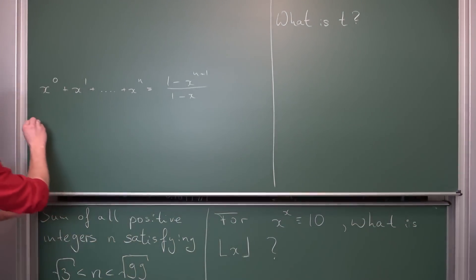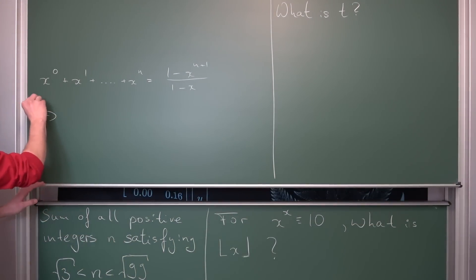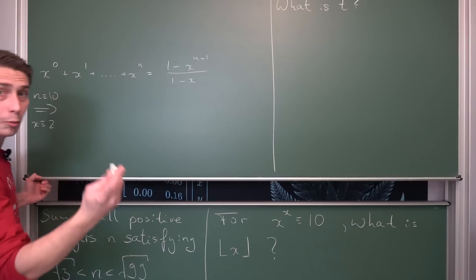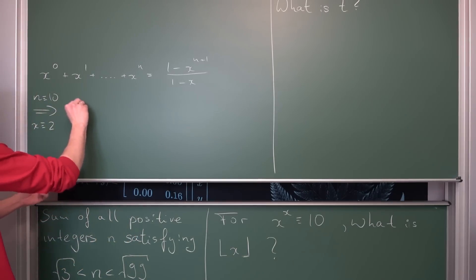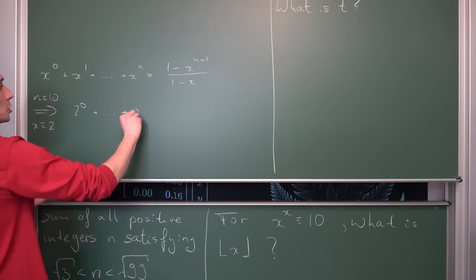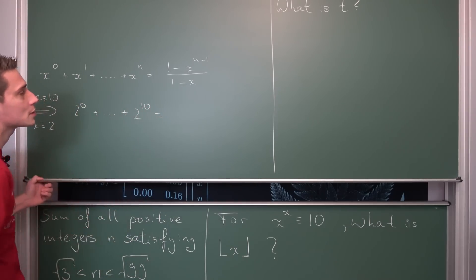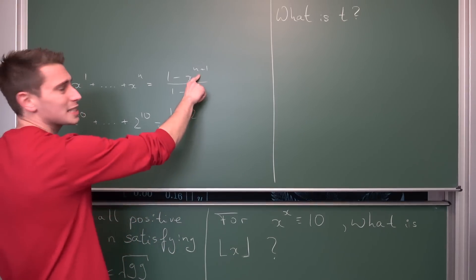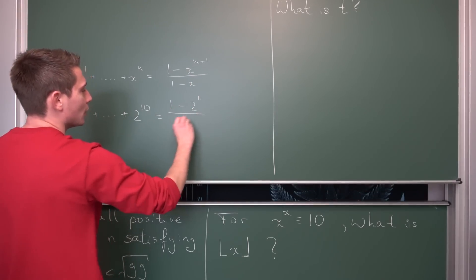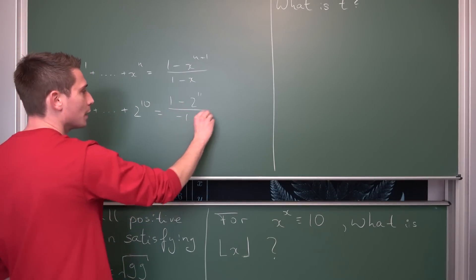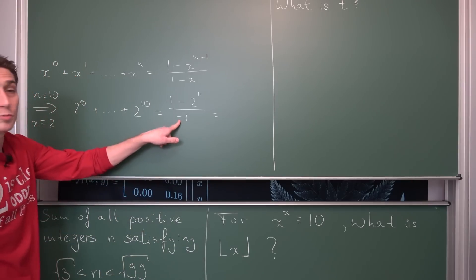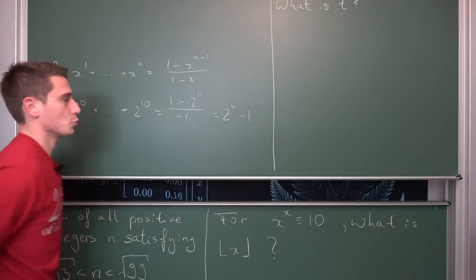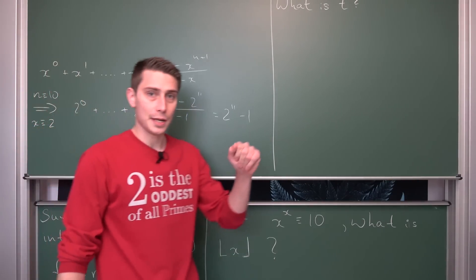In our case for n being equal to 10 and x being equal to 2, we are going to get that 2 to the 0th power plus up until 2 to the 10th power is going to result in 1 minus 2 to the 11 divided by 1 minus 2 is negative 1, which is going to result in distributing the negative sign in, giving us 2 to the 11th power minus 1. I mean 2 to the 10th power is 1024.